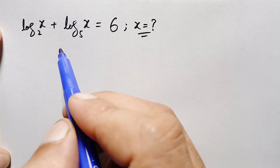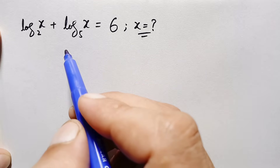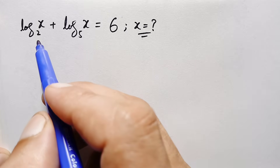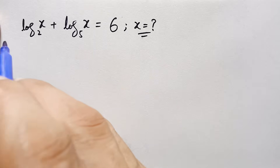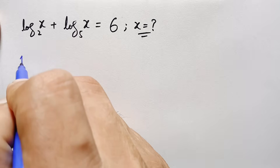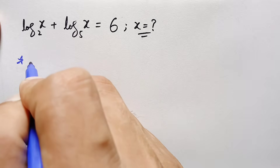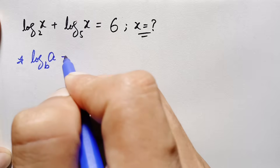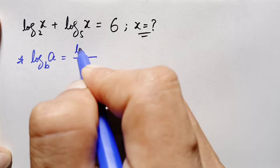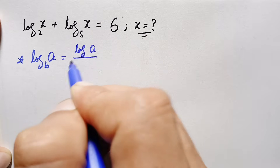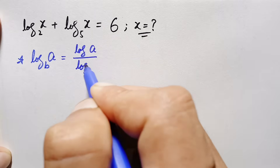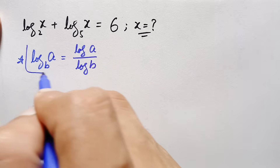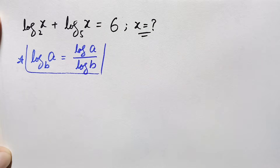How can we solve this log problem with different bases? First of all, in the left hand side we will use the change of base logarithm identity. Using this logarithm property, we can write log of a with base b as log of a divided by log of b.